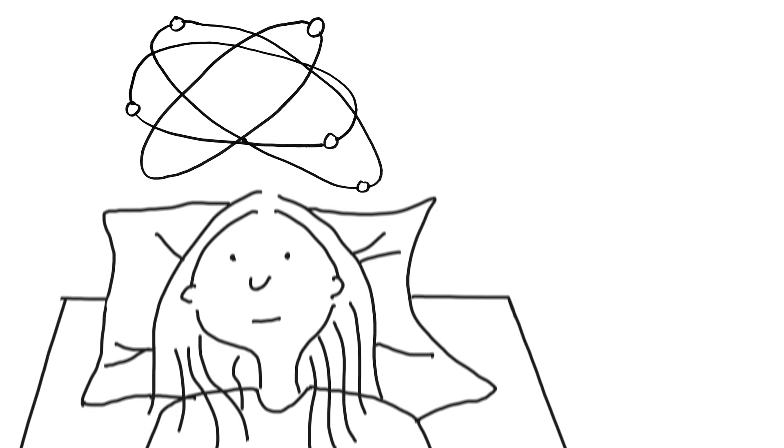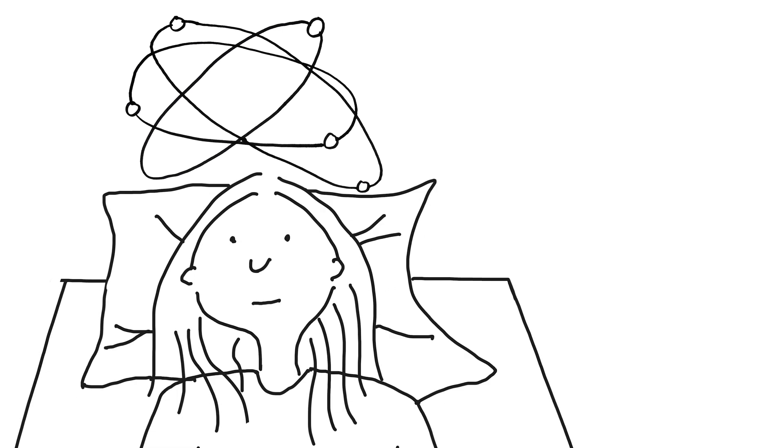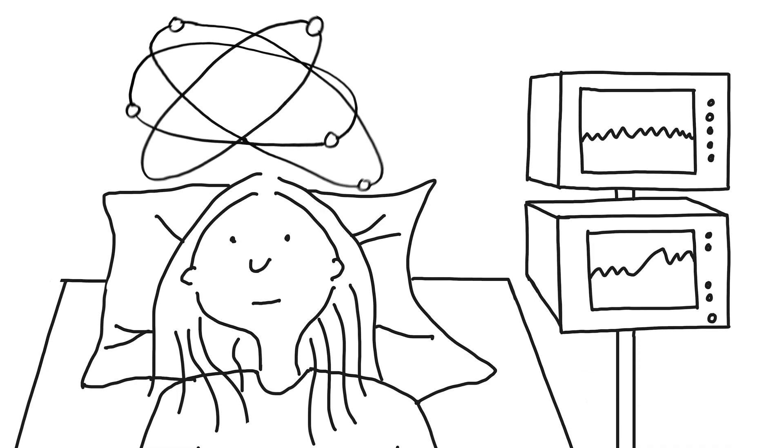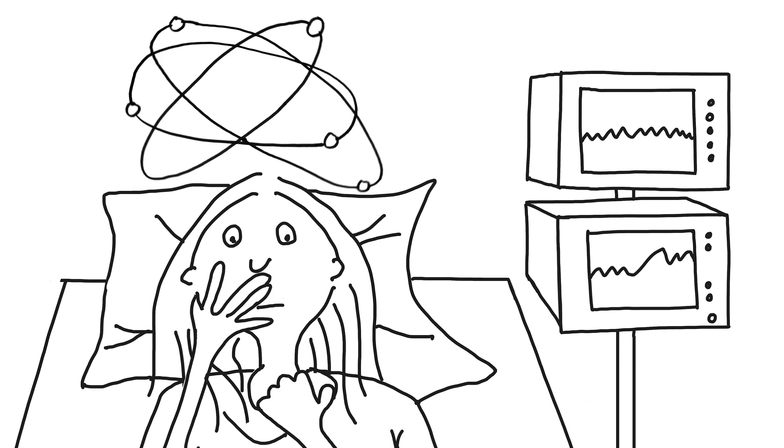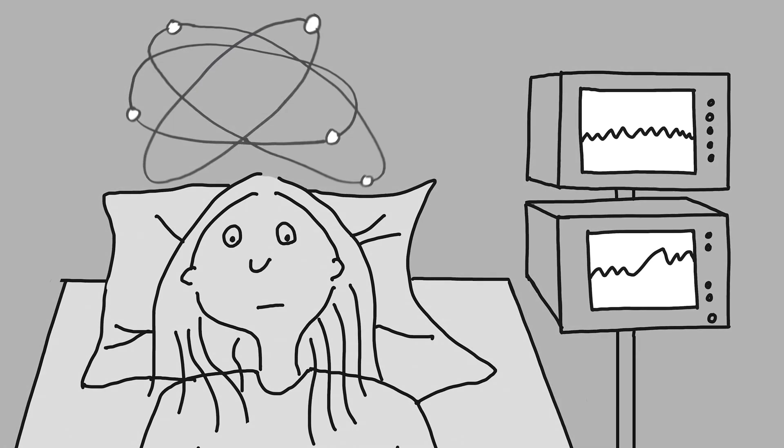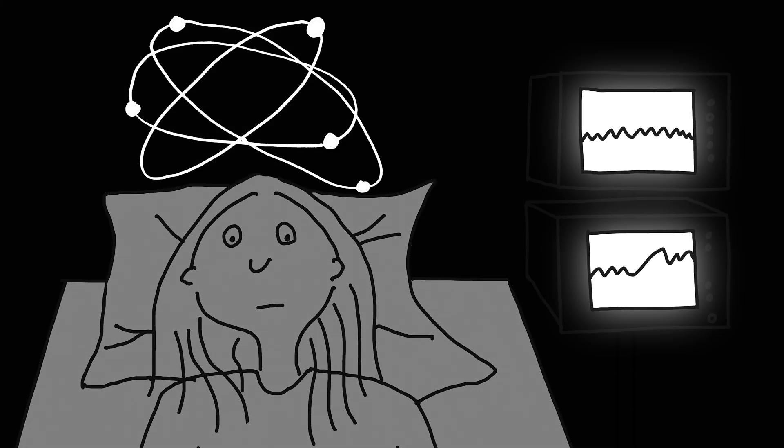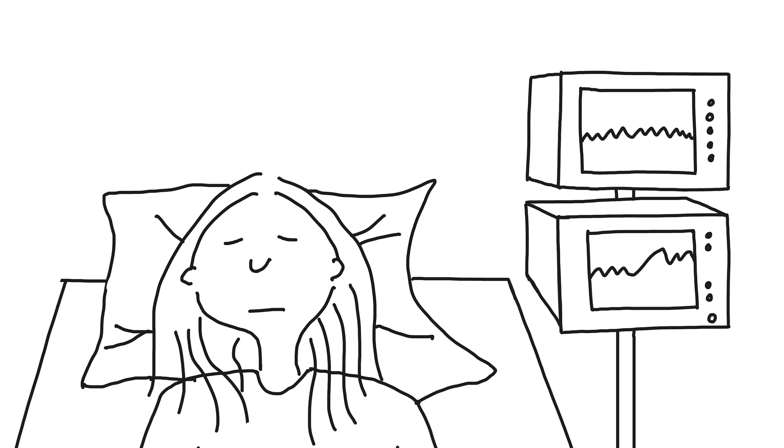Acute confusion is called delirium. It occurs in half of the ICU patients. Usually, delirium lasts for a few days, but sometimes it lasts much longer. The extent of the delirium fluctuates and it mostly increases in the evening and at night. Patients can be very absent or even agitated, angry, or anxious.